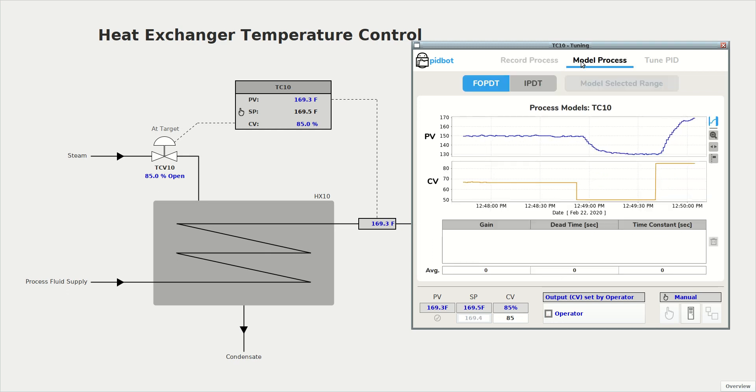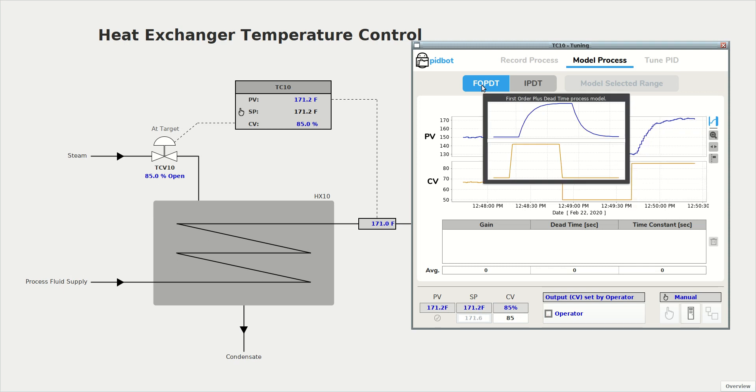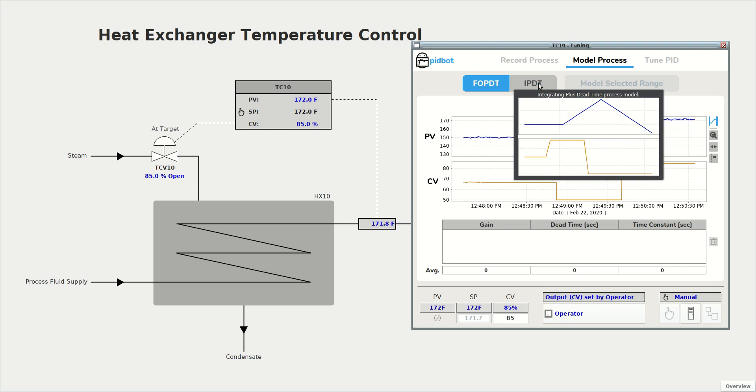We'll do that on the second tab. You want to select the type of process model that you're going to use. In our case, we're going to use the first order plus dead time model. That's always the case or almost always the case for temperature control loops. If you mouse over these buttons, it shows you what a typical response would look like for the first order process. When you step the CV, you eventually reach a new steady state, whereas the integrating process does not reach a steady state. It would continue increasing or decreasing forever.